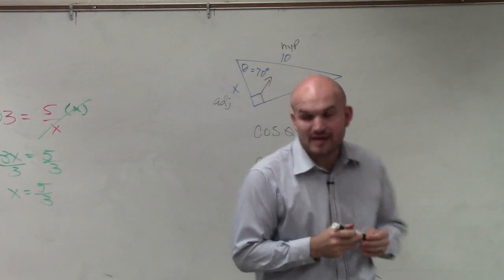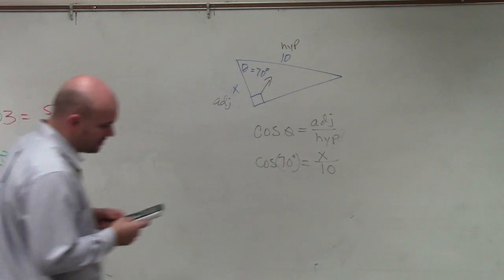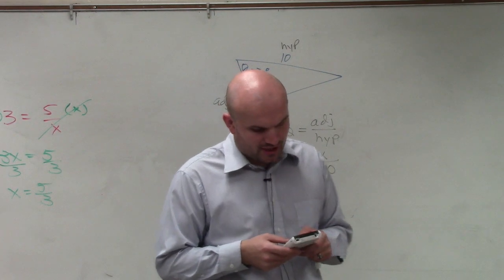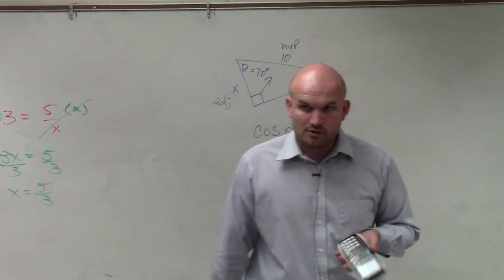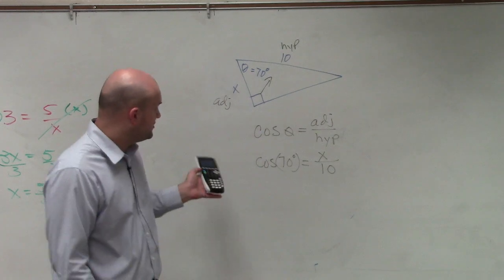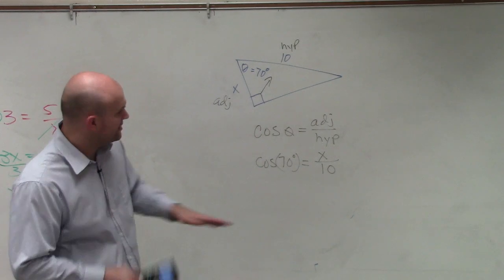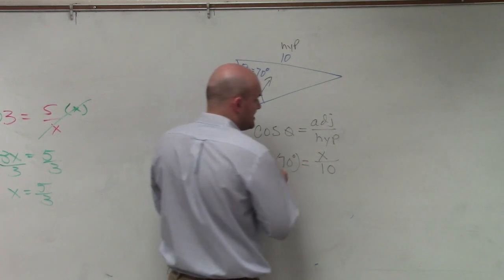So now you have to use your calculator. When you're doing this, you're going to want to make sure that your calculator is in degree mode, not in radian mode, which we'll be talking about today. So make sure your calculator is in degree mode. And then, oh actually, let's solve for x. To get x by itself, we'd have to multiply by 10 on both sides.